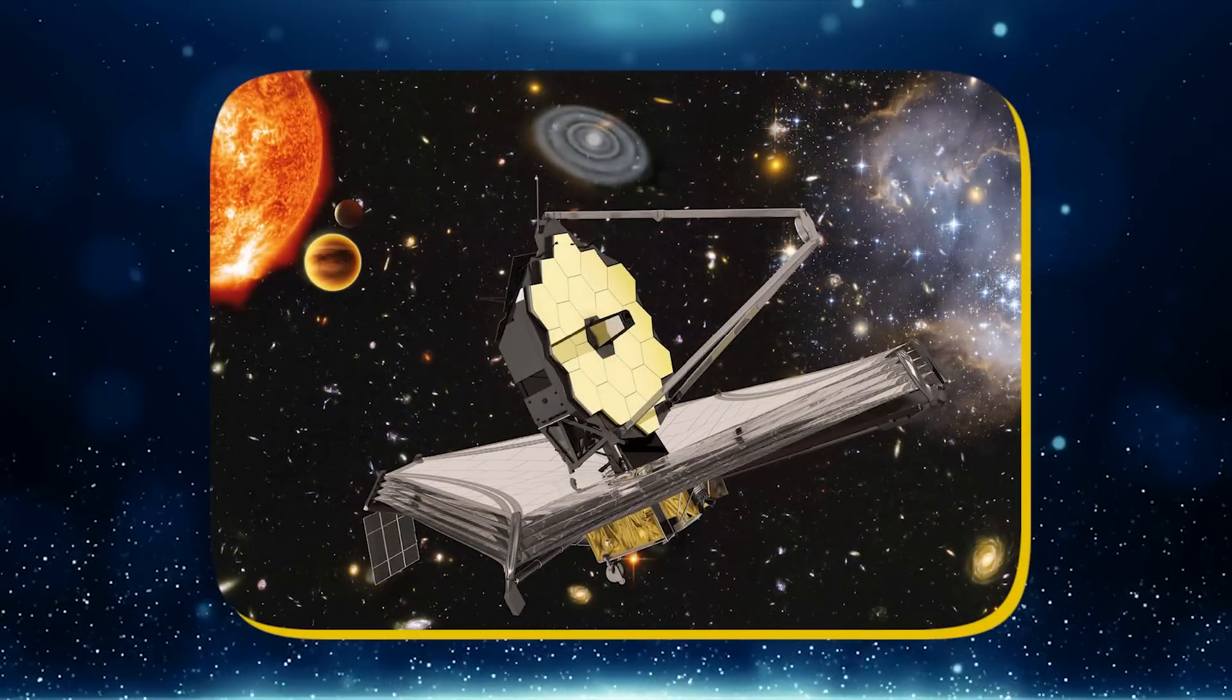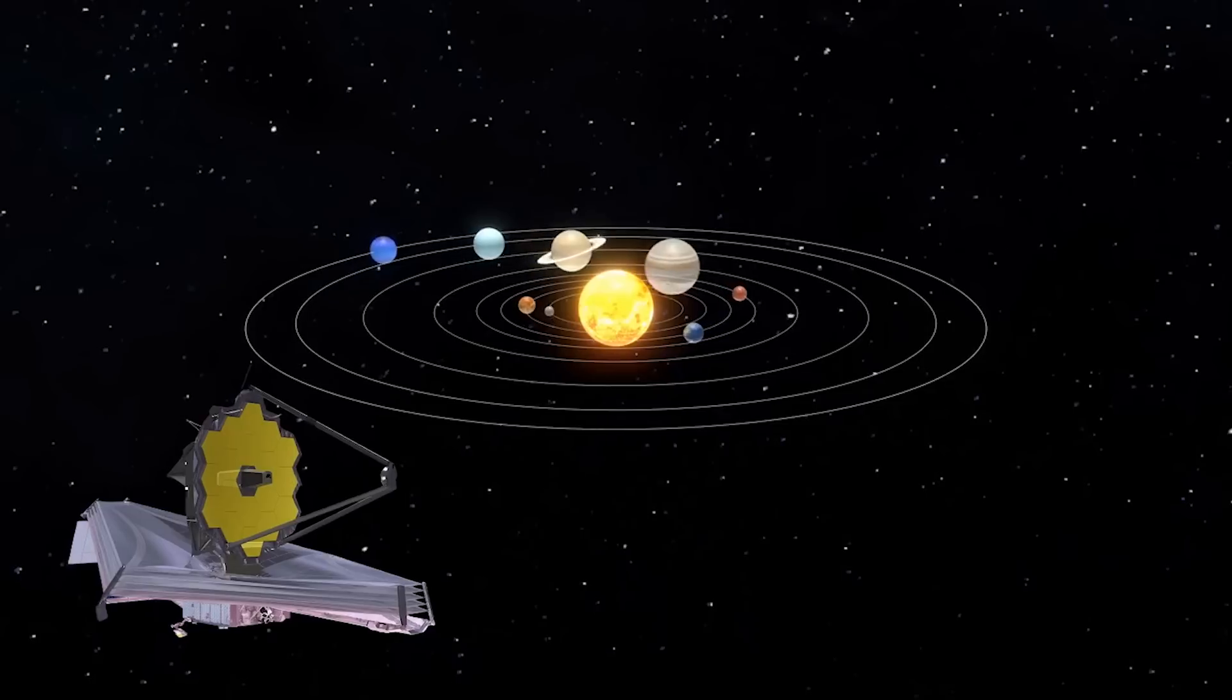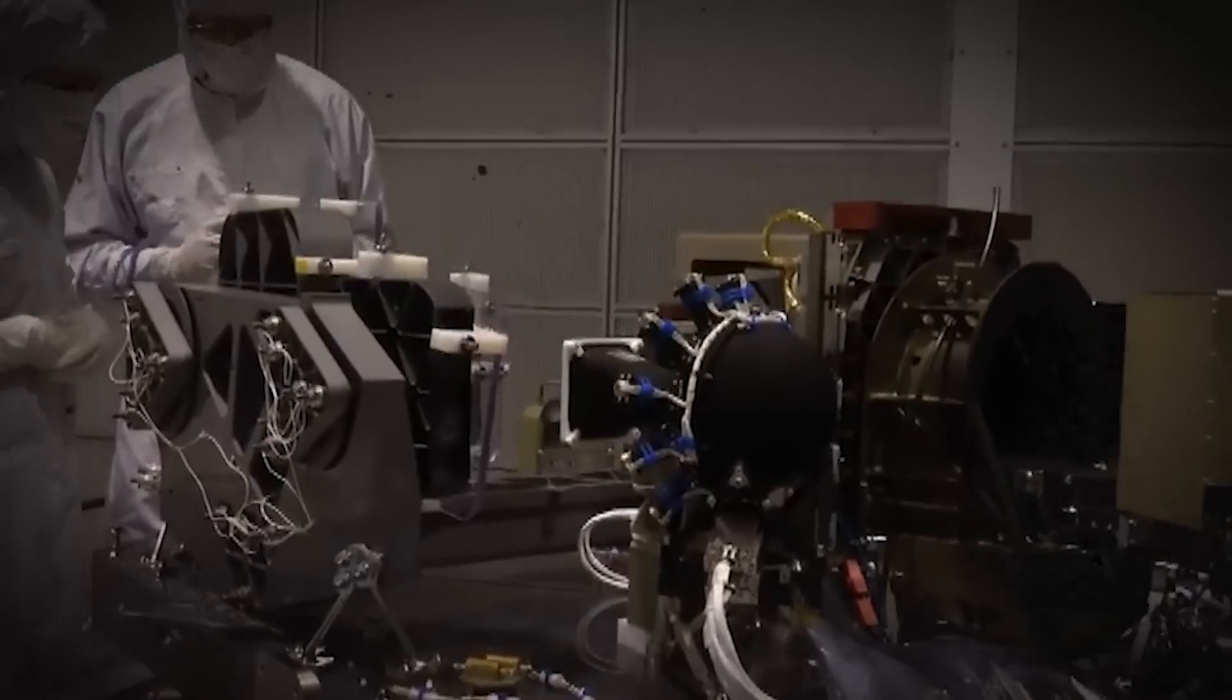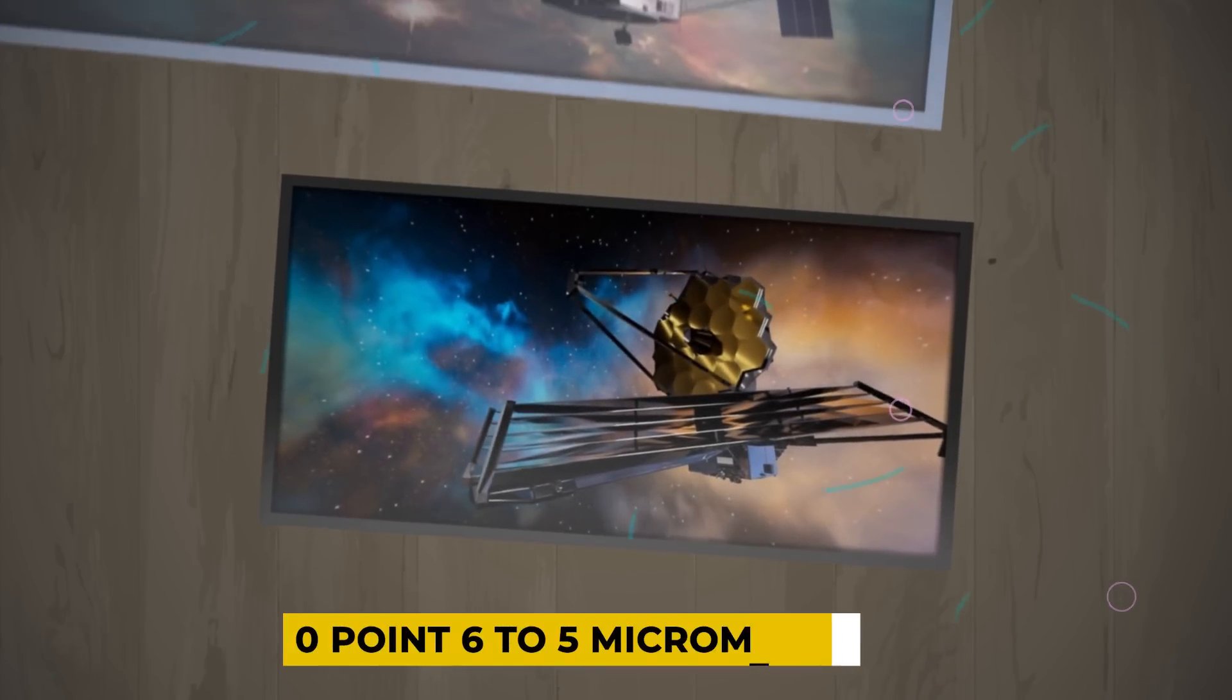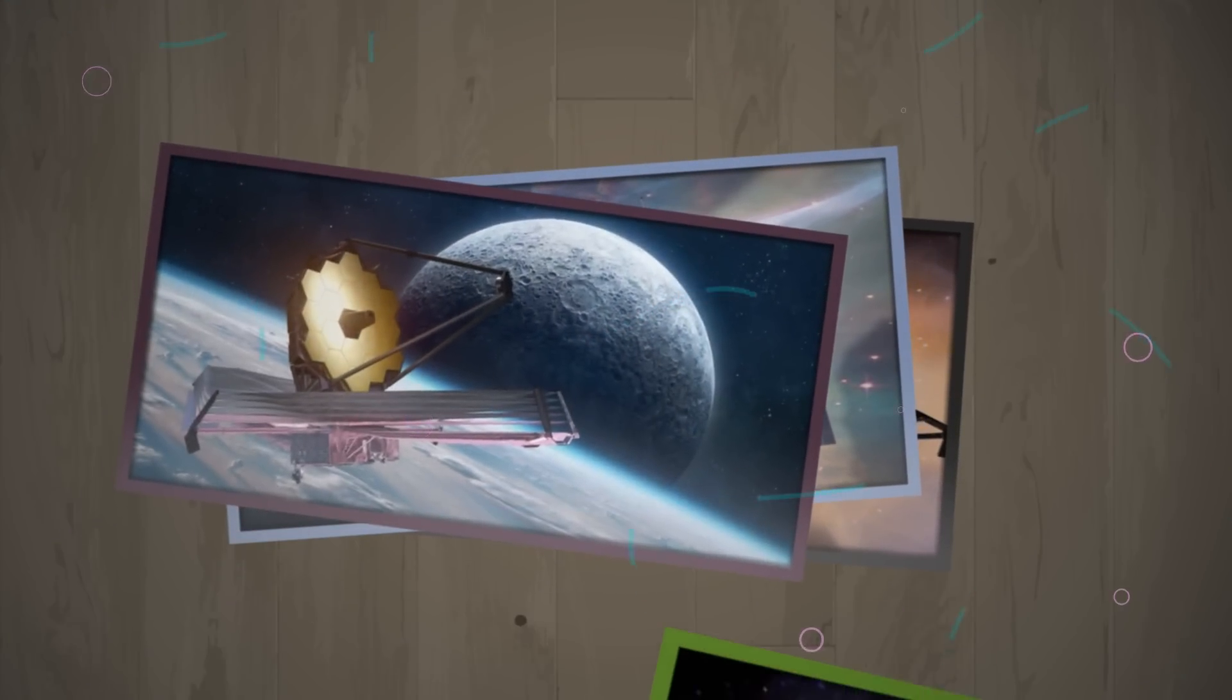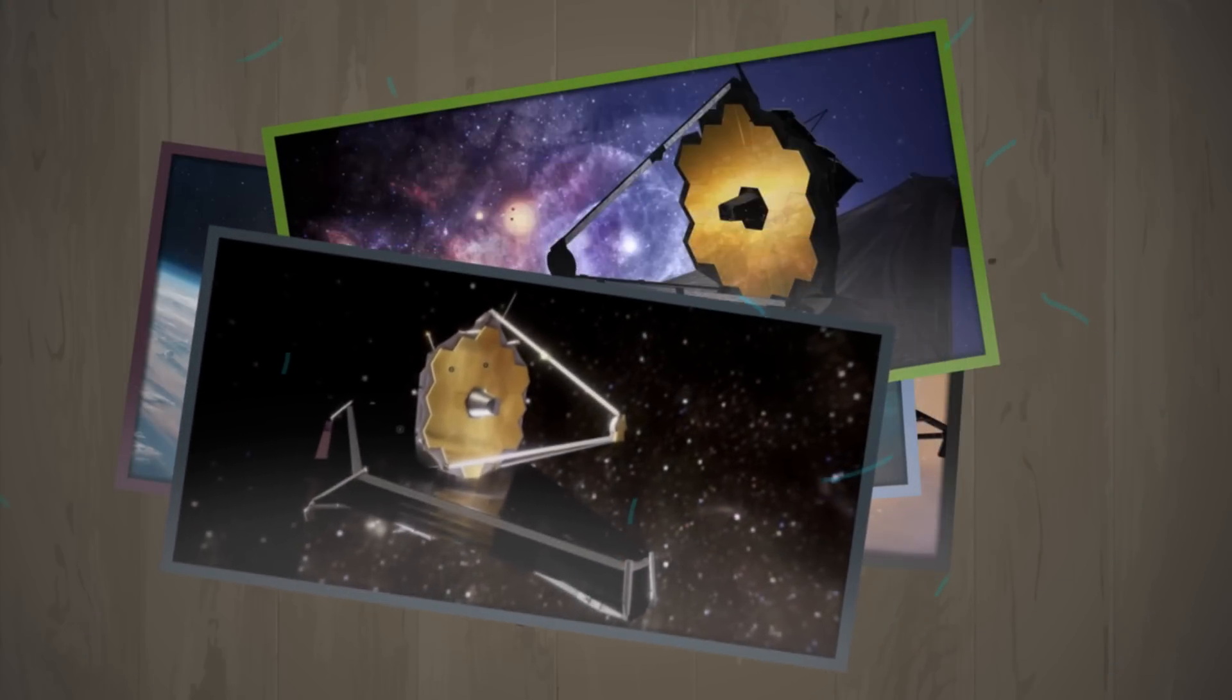One of the key players is the near-infrared spectrograph, NIRSpec, a powerful spectrograph that can look at light coming from hundreds of galaxies at once. Then there's the mid-infrared instrument, MIRI, which lets Webb peer through cosmic dust and see structures invisible to other telescopes.